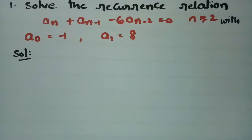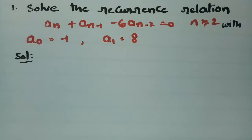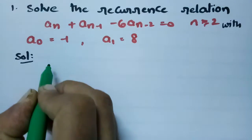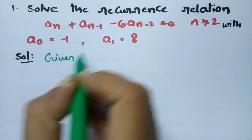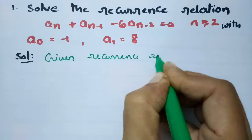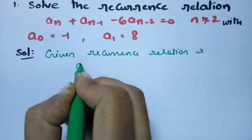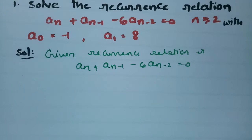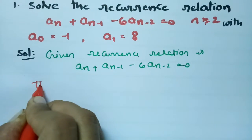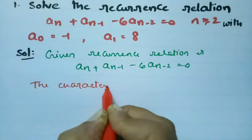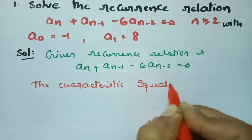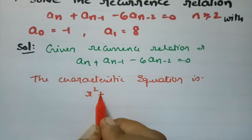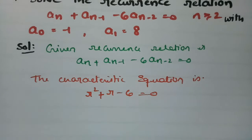Here is a problem for you to solve: Solve the recurrence relation An + A(n-1) + 6·A(n-2) = 0. This is a second order recurrence relation. The given recurrence relation is An + A(n-1) + 6·A(n-2) = 0. Now we write the characteristic equation, which is of order 2: R² + R - 6 = 0.